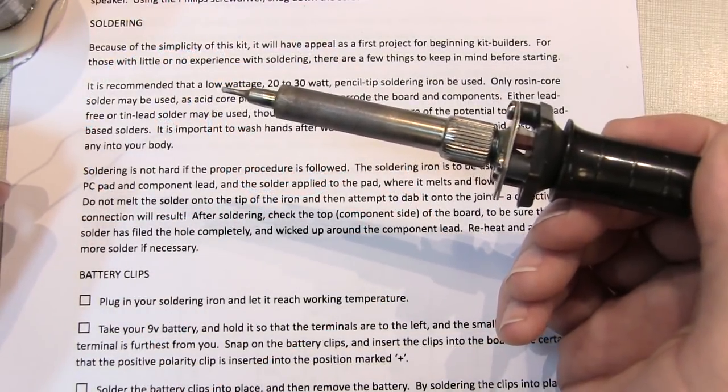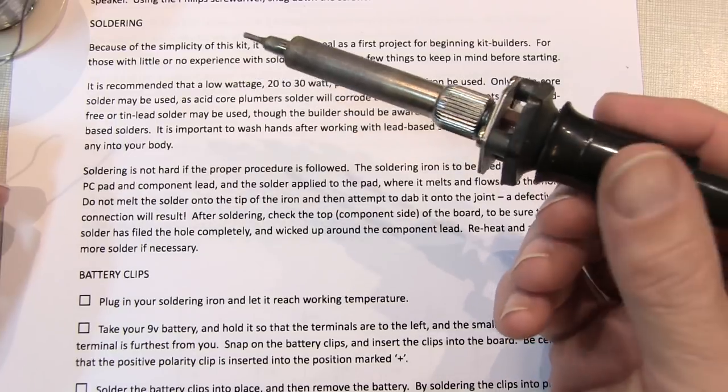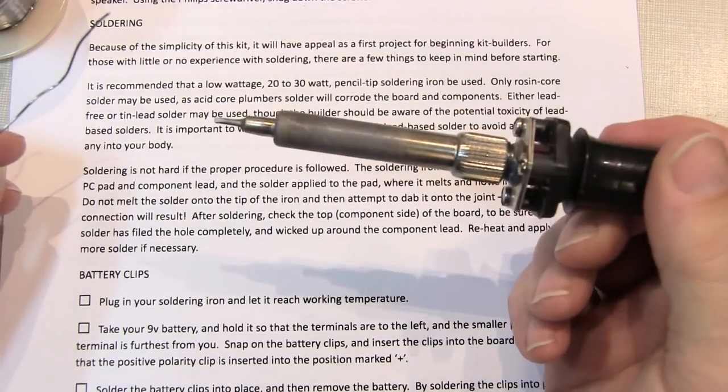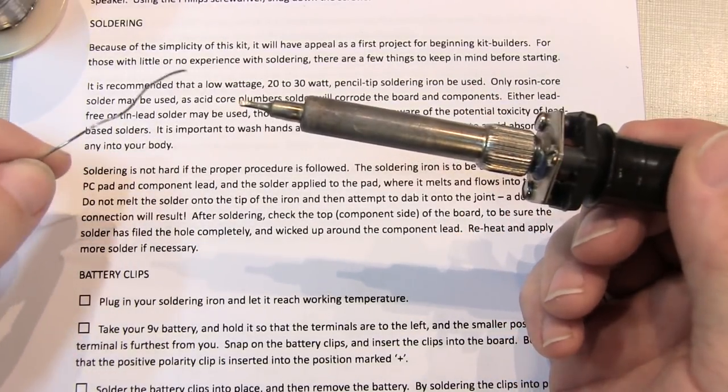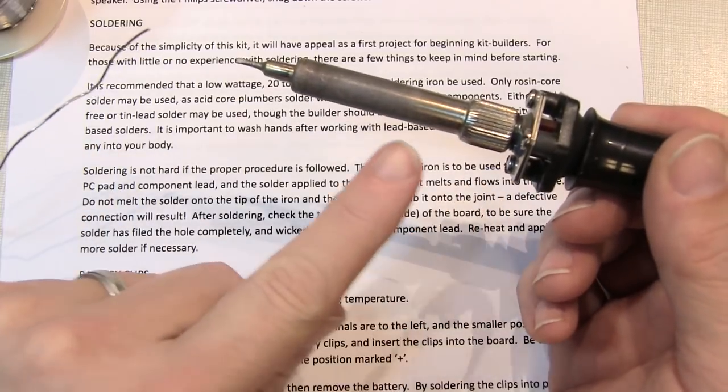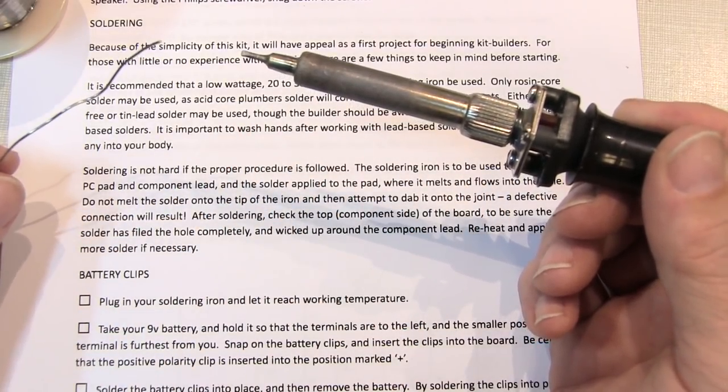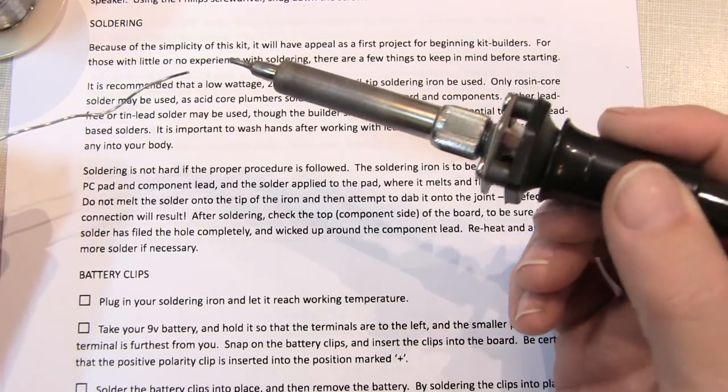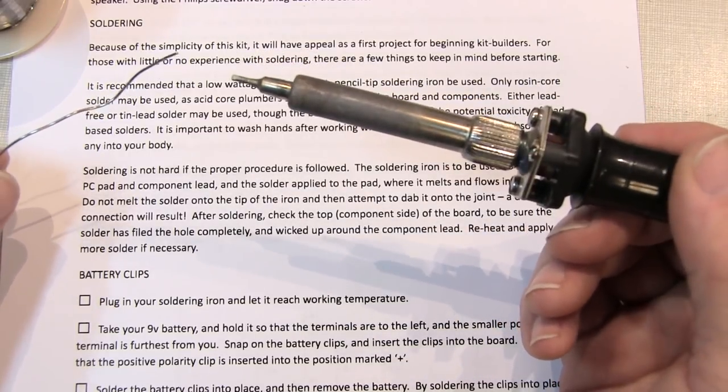Now before we start doing some soldering, some words of caution. The soldering iron gets very very hot, hot enough to melt metal, so do not touch any of the metal portions of the soldering iron once it's plugged in. And follow the instructions carefully when doing soldering so that you don't burn yourself.